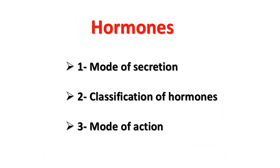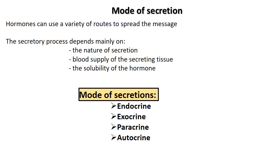Now we will go into more detail to talk about hormones: their mode of secretion, their classification, and their mode of action. Hormones can use a variety of ways to spread their message: in an endocrine, paracrine, autocrine, or exocrine way. The secretory process depends mainly on the nature of the secretion, the blood supply of the secreting tissue, and the solubility of the hormone.